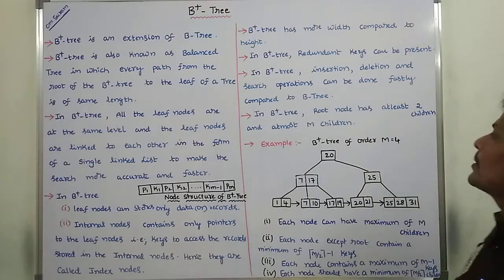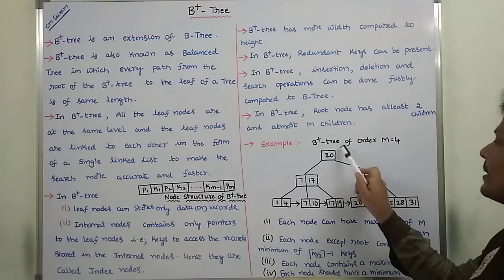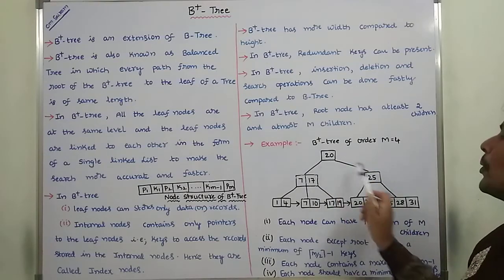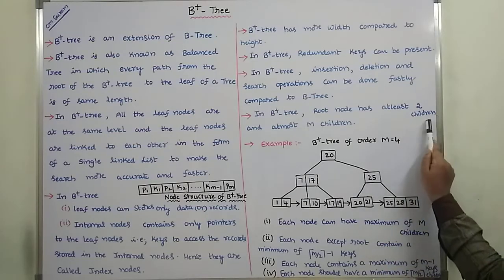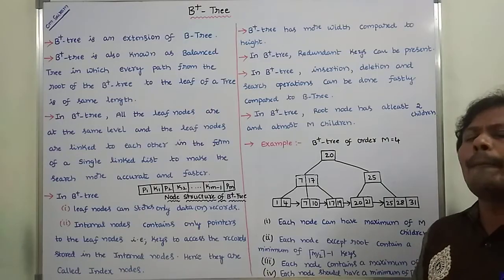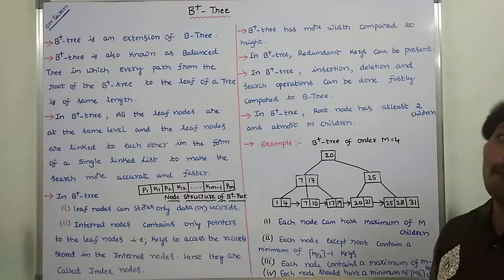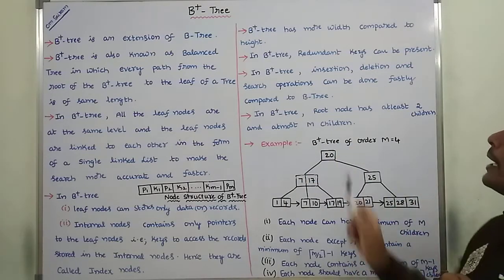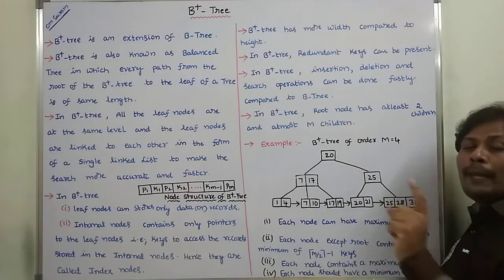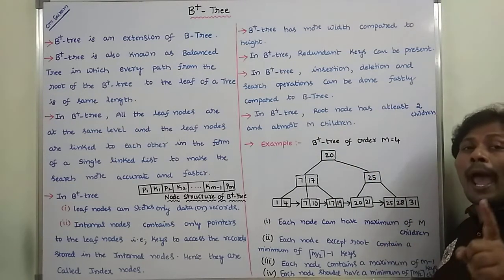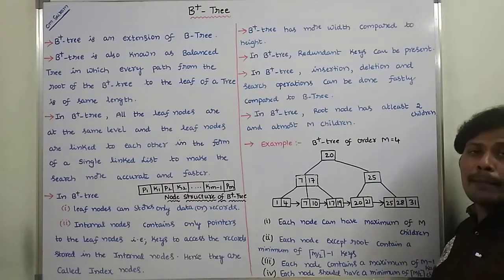In B plus tree, the root node has at least 2 children. This root node has 2 children. It may contain more than 2 children also — minimum 2 children and maximum M children. So the root node has minimum 2 children and maximum M children.